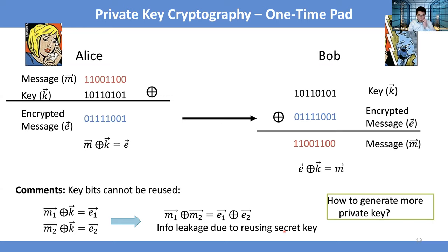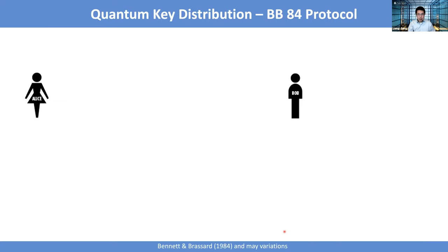This leads to the need: is there some way we can generate more secret keys? Then we'll be able to achieve more secure communication. Quantum cryptography is a procedure that starts from a short sequence of secret key shared between two parties, then generates more and more secret keys so you can achieve secure communication over longer messages. This is the scenario.